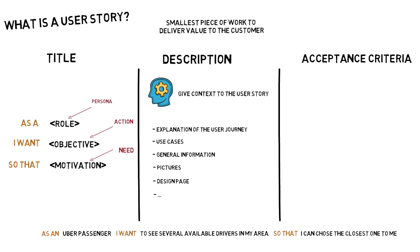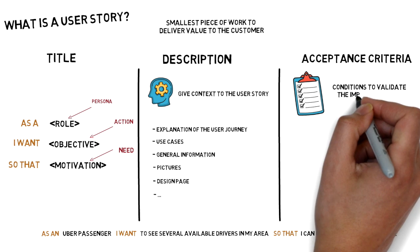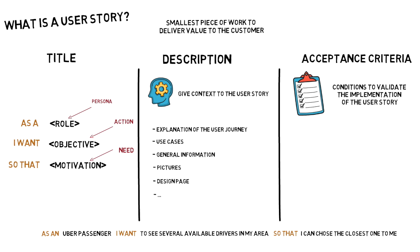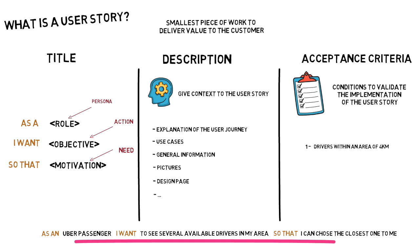Along with the title and description, one last important element that should be included in the user story is the acceptance criteria. These are a set of conditions that help us validate the implementation of our user story and confirm when it is completed. For our Uber passenger example, acceptance criteria could be: the app shows only drivers within 4 km from the customer; the app shows maximum 10 drivers in the same area; and a customer can check the profile of these drivers, including their picture and rating. The acceptance criteria help us understand key characteristics that require special attention during implementation, and going through them with the team at the time of writing is the best way to fully develop the functionality.